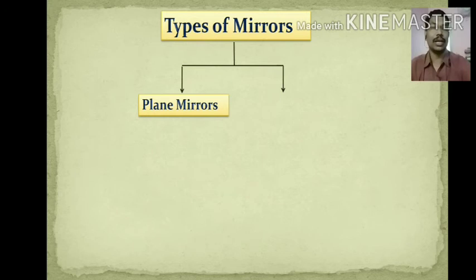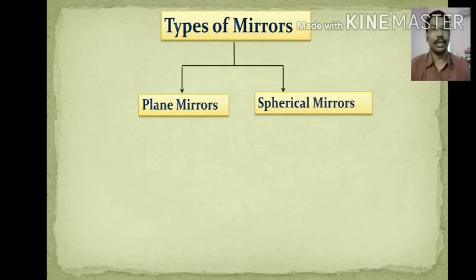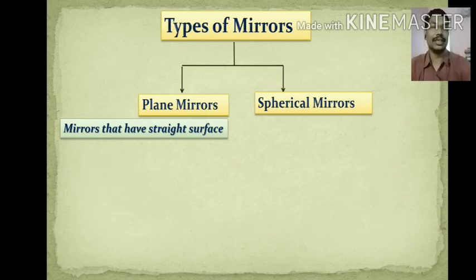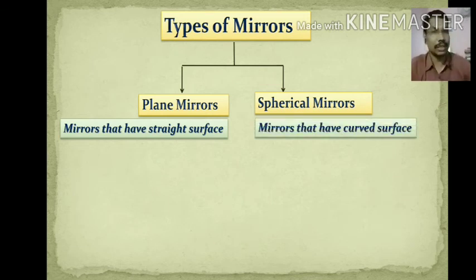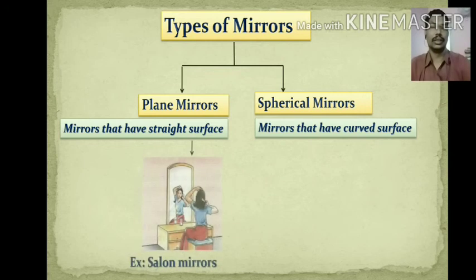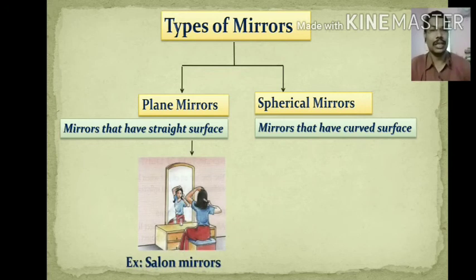There are mainly two types of mirrors: plane mirrors and curved spherical mirrors. Plane mirrors have a straight surface and spherical mirrors have a curved surface.